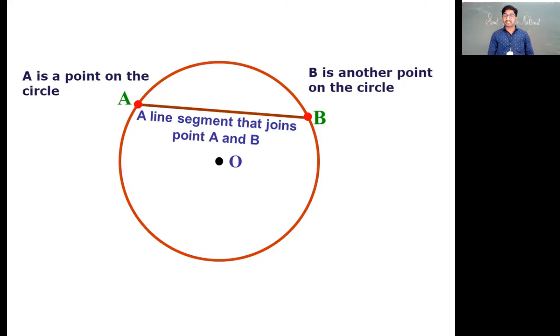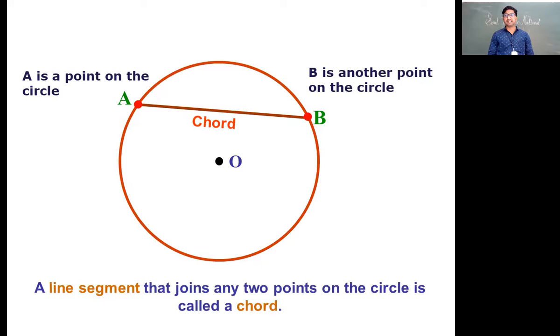But the special name for that line segment is chord. The line segment that joins any two points on circle is called the chord of circle. The definition is given in front of you.